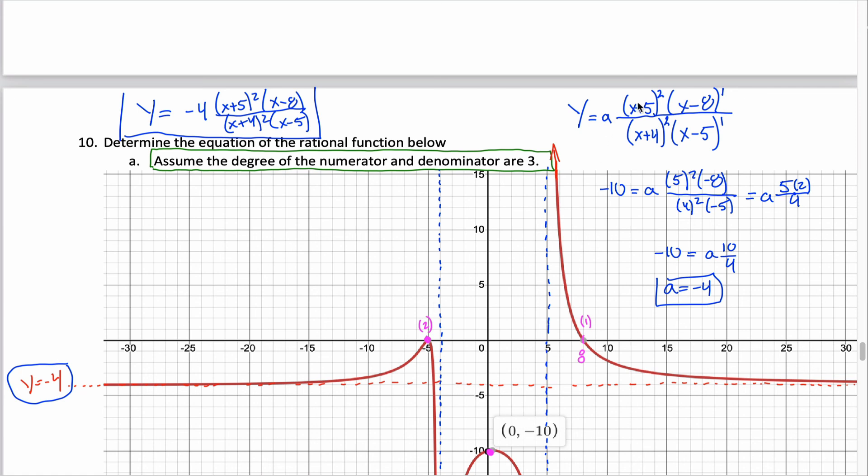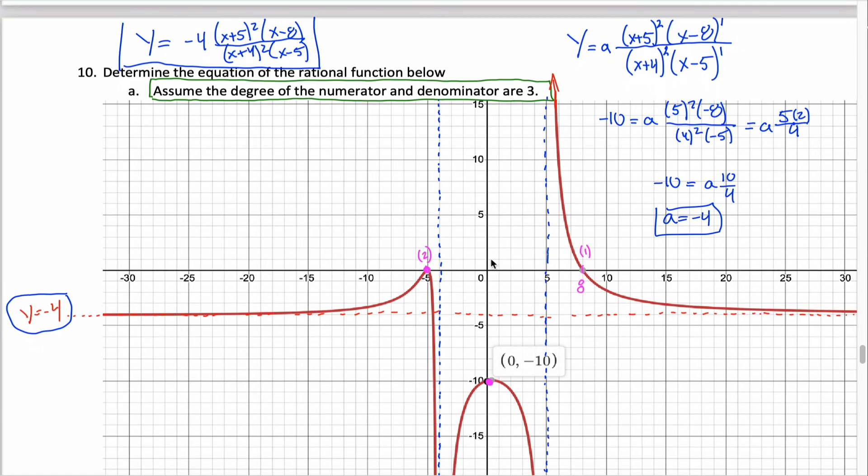The point is we can do all the work on the factors by looking at the x-intercepts, the vertical asymptotes, and a hole if it exists. Make sure you incorporate the correct multiplicities for each of those different factors. But then don't forget there could be a number out in front. So always put like the letter a out in front and then solve for that a either using the y-intercept or using the end behavior.